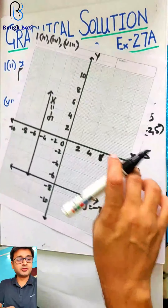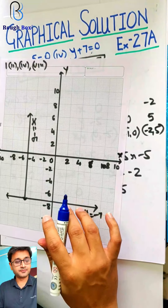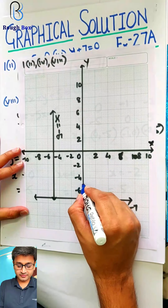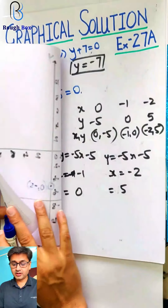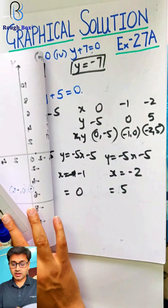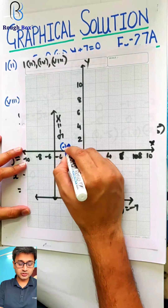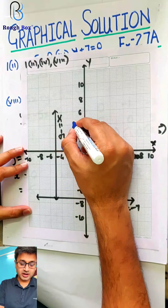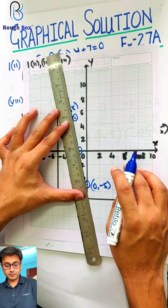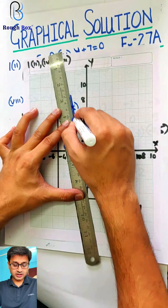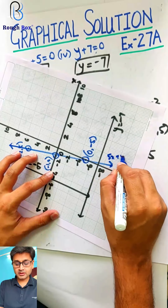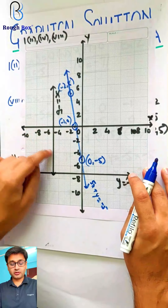Let's plot and see if they are collinear. I'll use a blue pen so it is identifiable easily. First point: (0, minus 5) on the y-axis. Second point: (minus 1, 0) on the x-axis. Third point: (minus 2, 5). They are collinear, so let's draw a line passing through all three points. Write the name of the equation: 5x plus y equals to minus 5. All three equations are the same line.